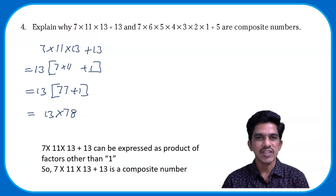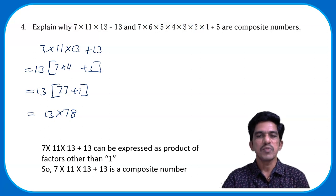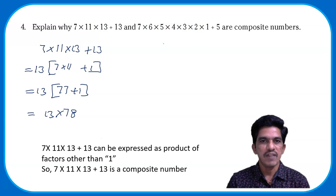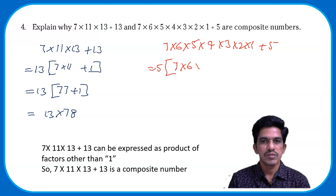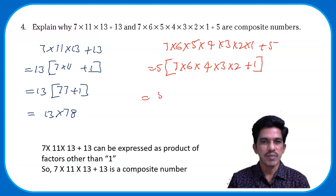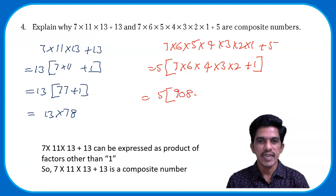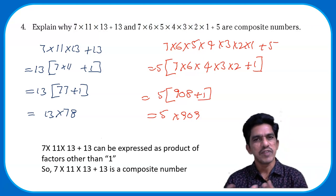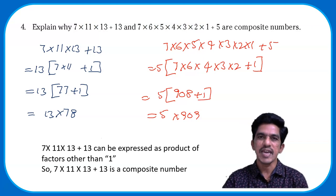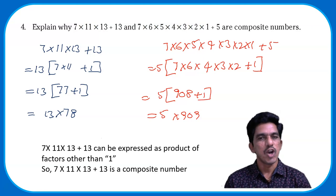Therefore 7×11×13 + 13 has factors other than 1, so it is a composite number. For the second number, 7×6×5×4×3×2×1 + 5, take out 5: it becomes 5×(7×6×4×3×2 + 1) = 5×(1008÷... = 5×909). This number can also be written as a product other than 1, so it is a composite number.